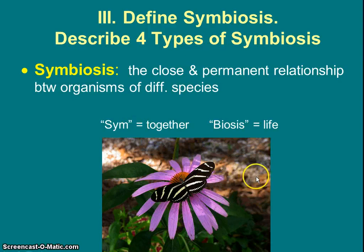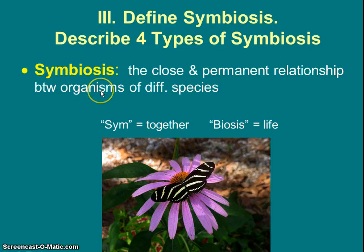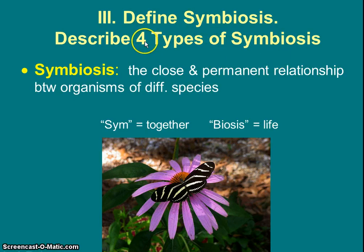Here's a really good example: a butterfly — we see them all the time — and what are they always living together with? Plants and especially flowers. They're relying on each other. All the different types of symbiosis involve two different organisms relying on or living together with each other. We're about to learn four types under Roman numeral three, so we have four more vocab words before we finish today.